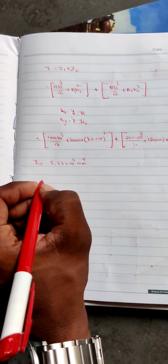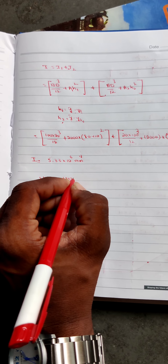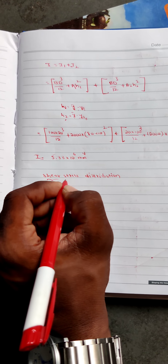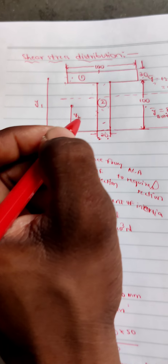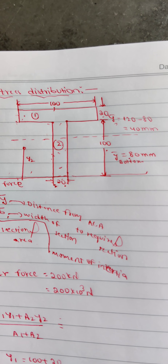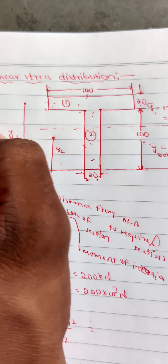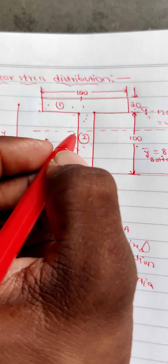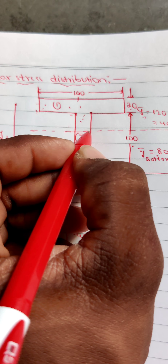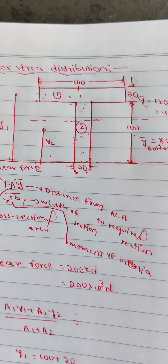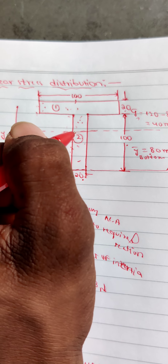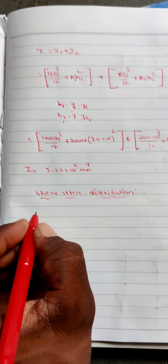Now we calculate the shear stress distribution for the T-section. Listen carefully: for the T-section there are 3 shear stress values. Tau 1 is at the flange and web junction. Tau 2 is at the web and flange junction. The final one is shear stress at the neutral axis. Shear stress at the top and bottom fibers will be zero.